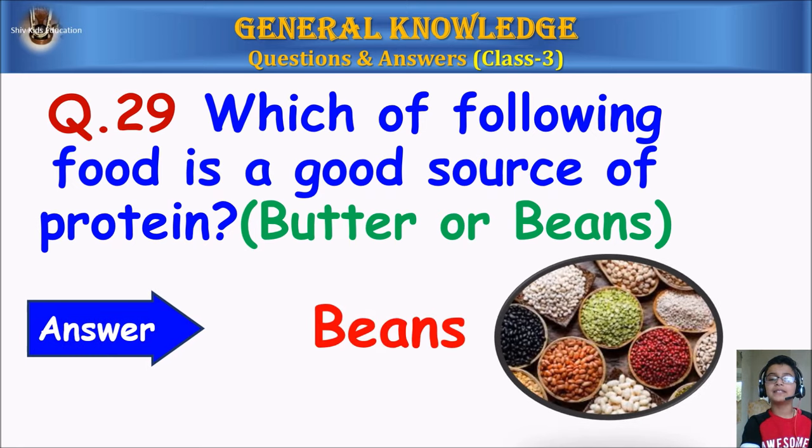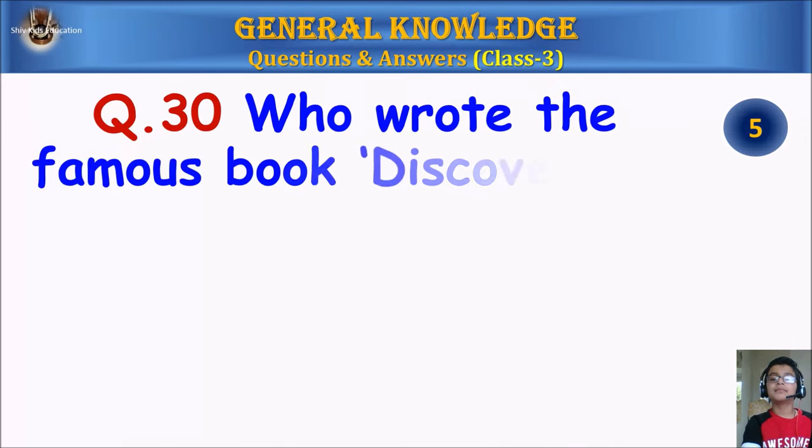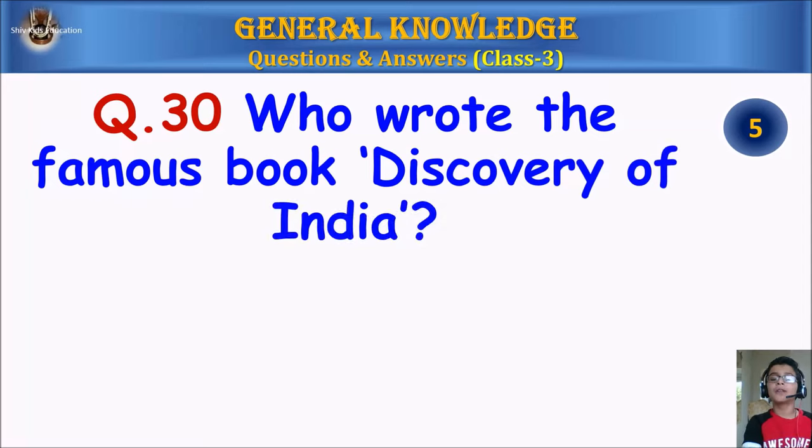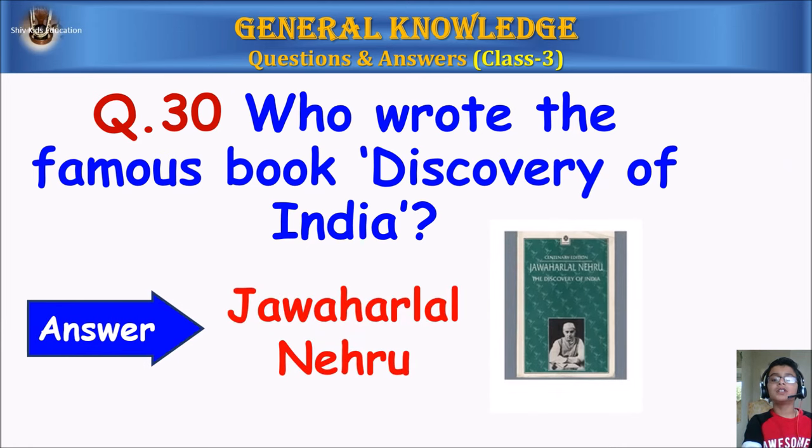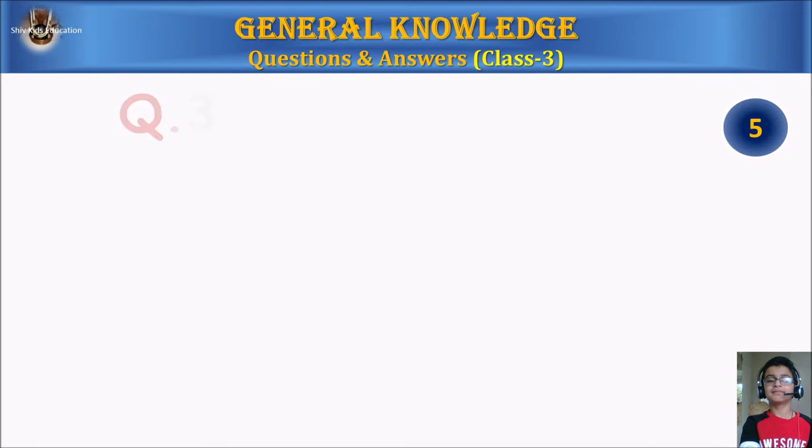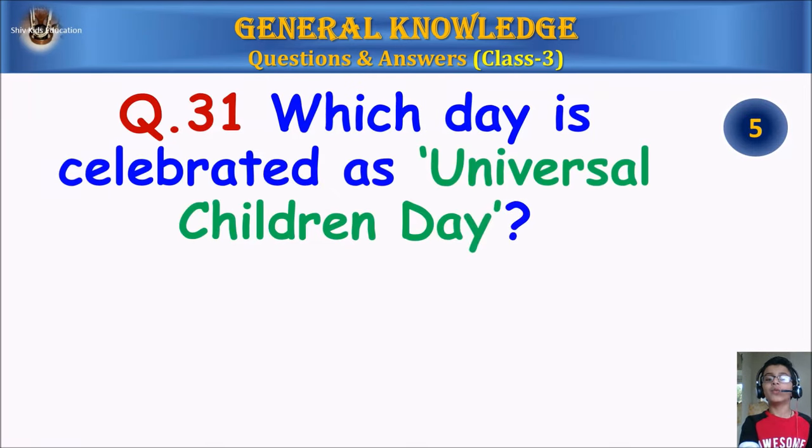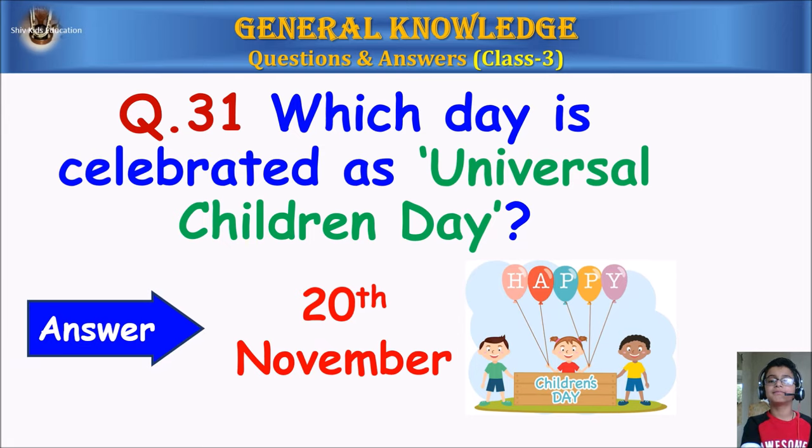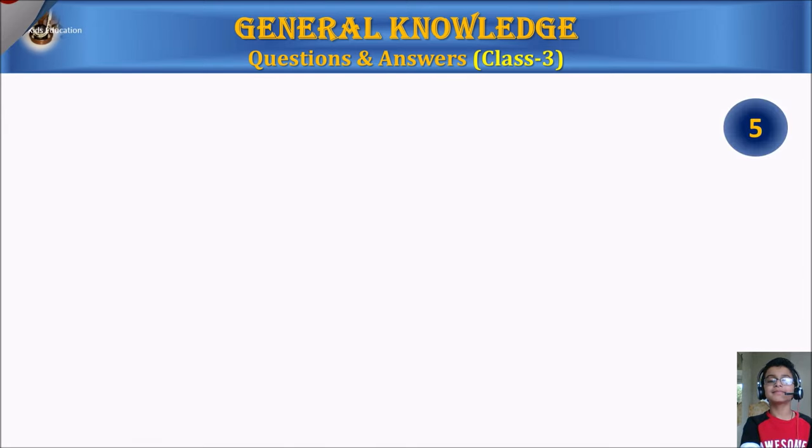Question 30: Who wrote the famous book Discovery of India? Your time starts. Answer: Jawaharlal Nehru. Question 31: Which day is celebrated as Universal Children Day? Your time starts. Answer: 20th November.